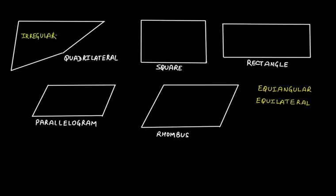Next one is a square. We know that in a square all the sides are equal to each other and all the internal angles are at right angle. So this is equiangular as well as equilateral, therefore a square is regular.